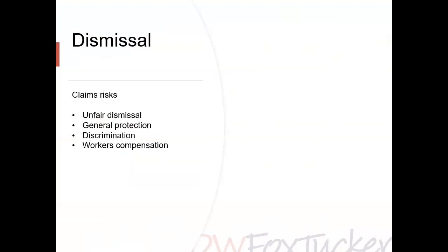In terms of the unfair dismissal jurisdiction, this is found in the Fair Work Act. The objects of the provisions include establishing a framework for dealing with dismissals, balancing the needs of business and employees, ensuring procedures that are quick, flexible, and informal, and providing that reinstatement is the primary remedy. An aim is to achieve a fair go all around. To seek an unfair dismissal remedy, a dismissed employee must have been employed for the minimum employment period — 12 months for a small business and six months for all other businesses.